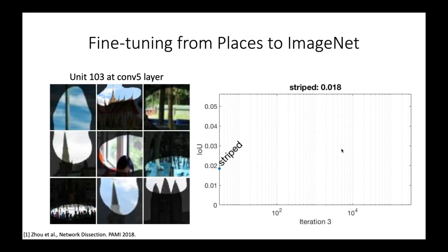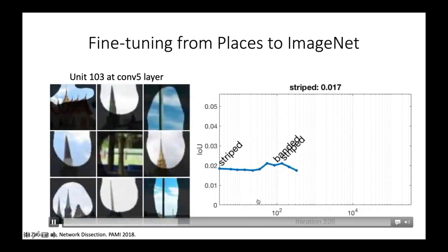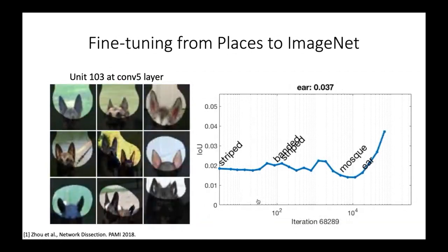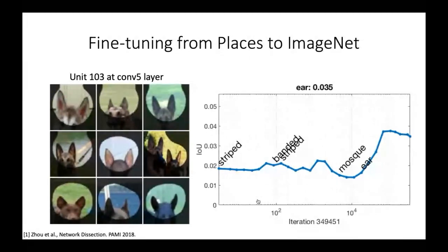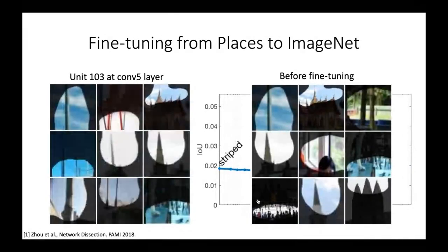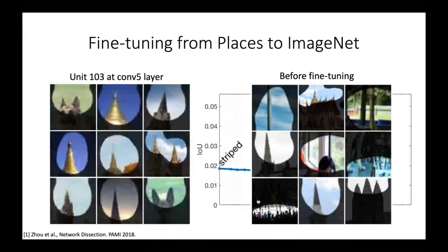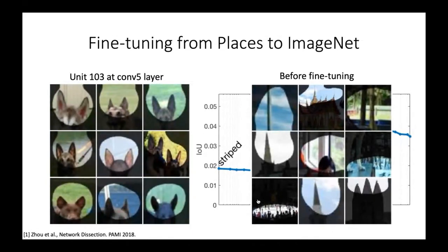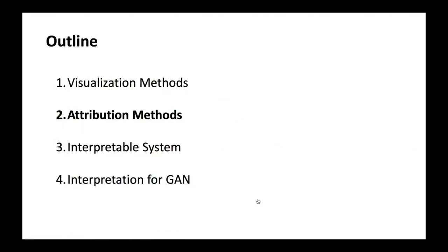I'll show a very interesting application — how we visualize semantic change during fine-tuning. You can see that fine-tuning from Places to ImageNet changed a unit's semantics from the spike of a tower to the dog's ear. They have similar patterns but different semantics — both are spike-like things. That's a very interesting visualization, and we can use that to visualize the fine-tuning process.